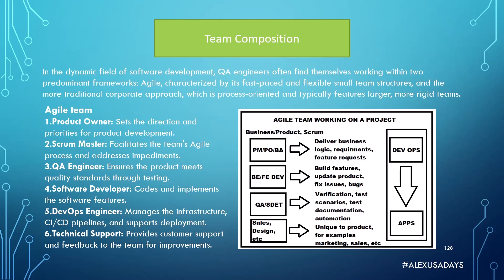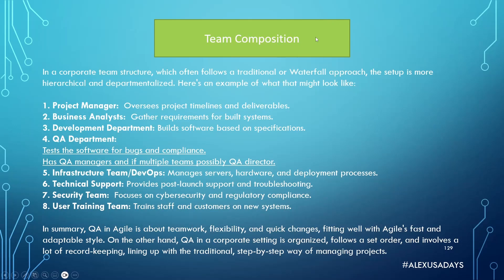The second major setup is the corporate structure. If you're going to work in a corporate setup, it will be a little bit different. Corporate team structure often follows a traditional or waterfall approach and is more hierarchical and departmentalized. At the top you have business — a project manager who oversees project timelines and deliverables. Then business analysts gather requirements and analyze standards. There's a development department with a development manager and director, and after that a whole QA department that is not embedded with any other department — it works on the completed product that comes from developers.